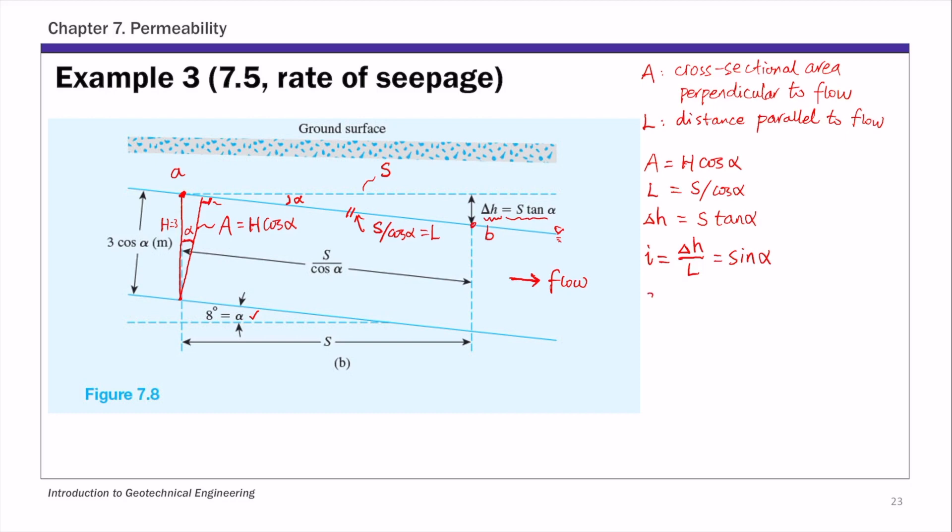Now back to Darcy's law, so the rate of seepage q equals to k i A. And this k is given, 5.3 times 10 to negative 5, and that's centimeter per second or meter per second. And then small i, hydraulic gradient is sine alpha where alpha is eight degrees. And then A is three times cosine alpha. H is three, so it's three times cosine eight.